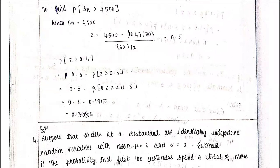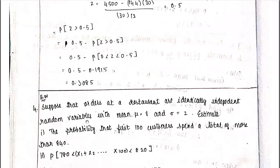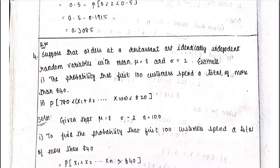Whether the distribution is Poisson or Exponential, the approach is the same. For the next problem about restaurant orders, orders are identically and independently distributed random variables with mean μ. For any distribution, if we know μ and σ, we can apply the CLT.